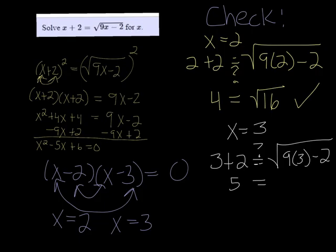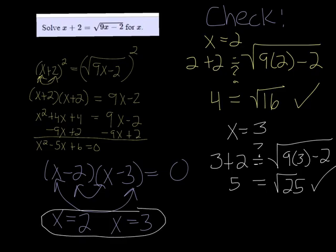So that's 5 is equal to the square root of... Well, 9 times 3 is 27 minus 2 is 25, and 5 does equal the square root of 25. So both of them are good. x equals 2 and x equals 3 are both the solutions.